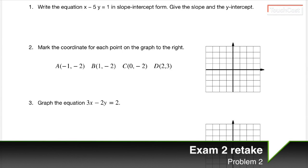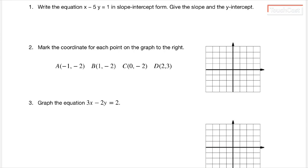Okay, so this is problem two of the exam two retake. In this case, we have a question that says, mark the coordinate for each point on the graph to the right. And we're given four different points that we need to mark. So the first thing I'm going to do is I'm going to look at the first point. So let's look at point A.